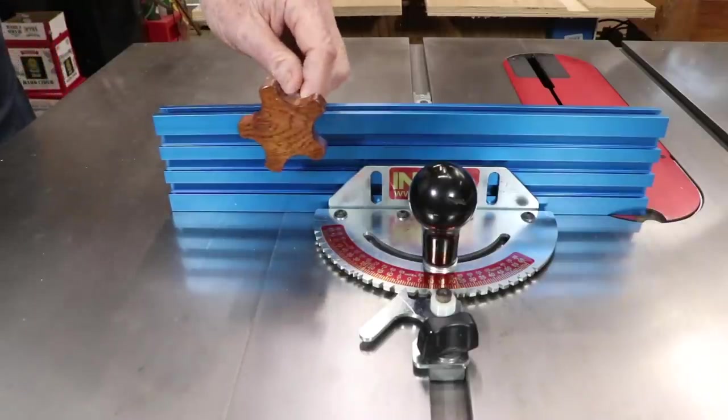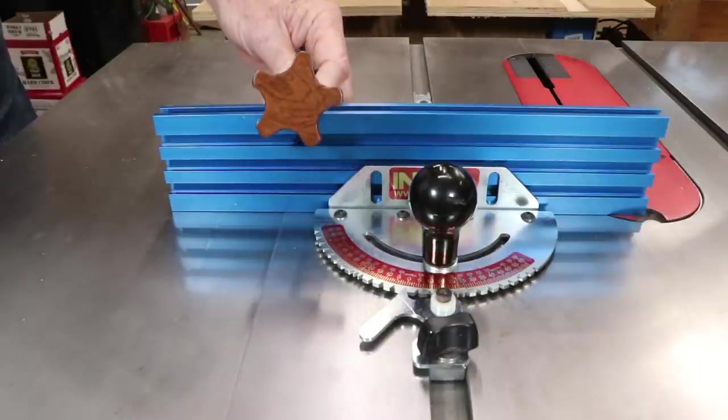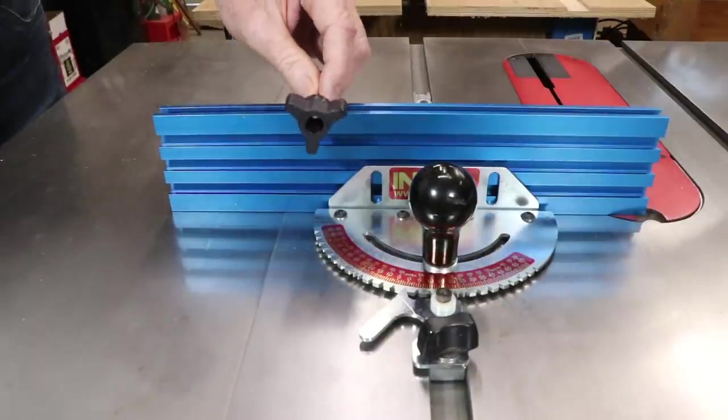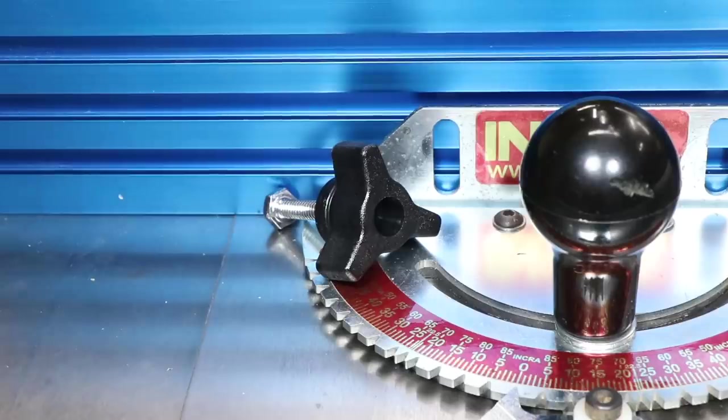Some nice knobs would be just the ticket for securing the fence to the jig. However, I had nothing that was the right size. This little three-sided black one was the smallest in my collection and you can easily see that it's way too big.